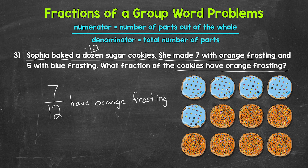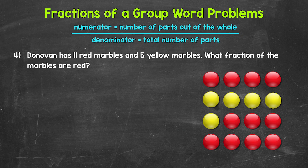Lastly, let's move on to number four. Donovan has 11 red marbles and five yellow marbles. What fraction of the marbles are red? Let's start with the denominator — we need the total number of marbles. Now the problem doesn't directly tell us how many marbles Donovan has.